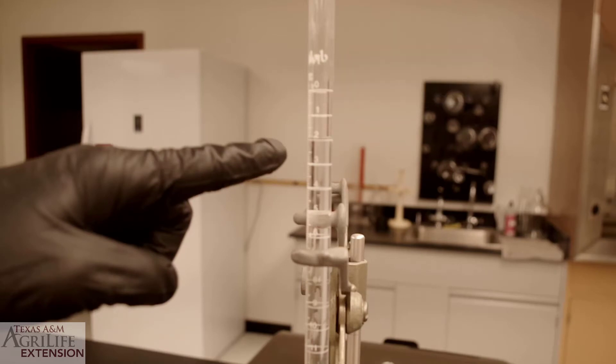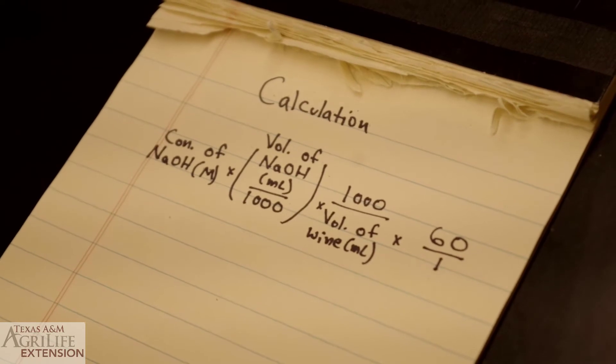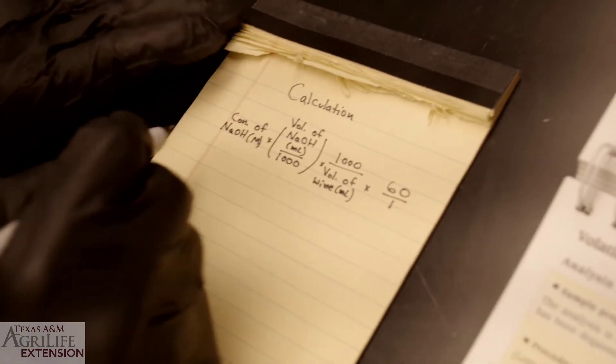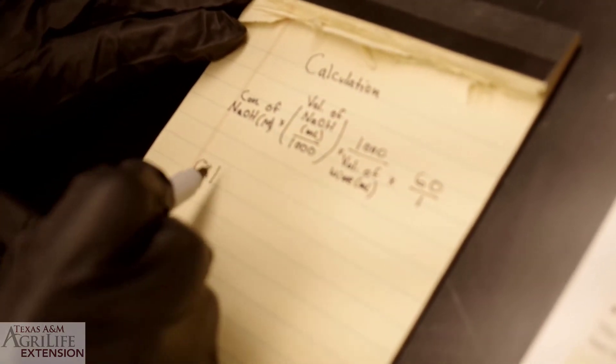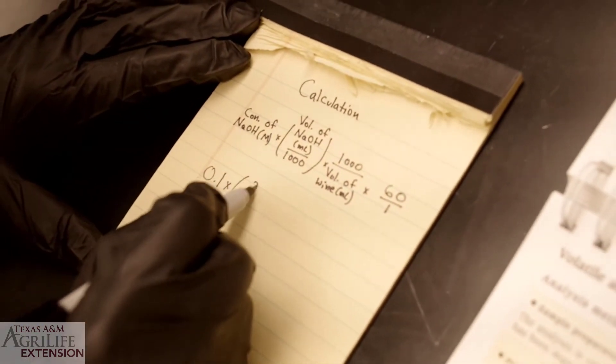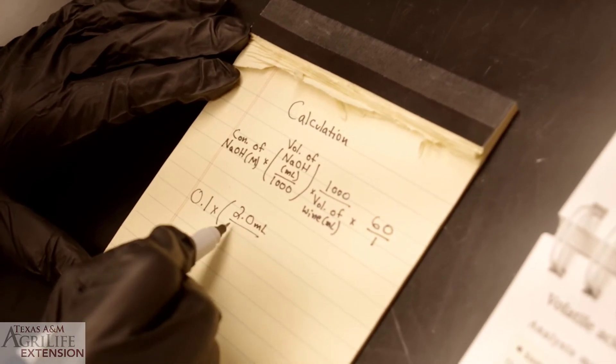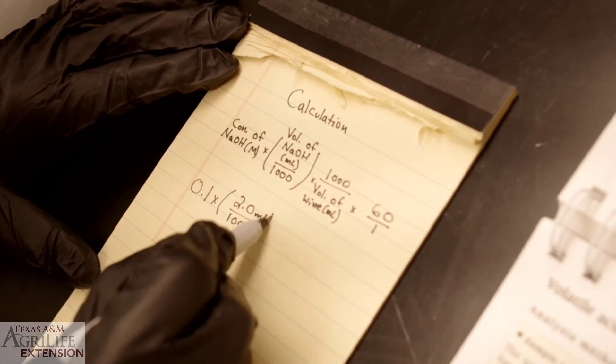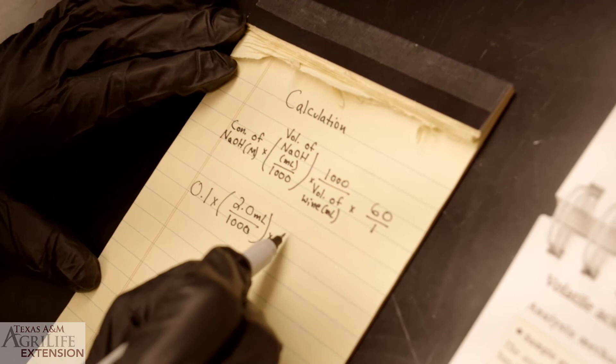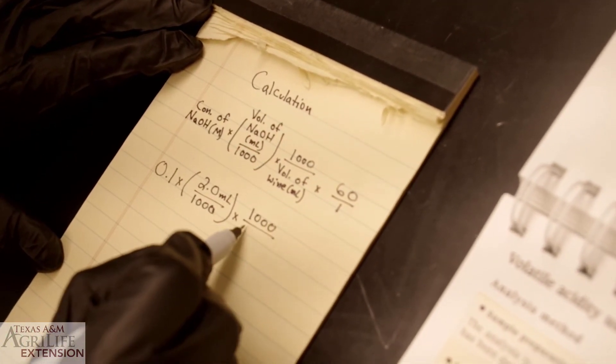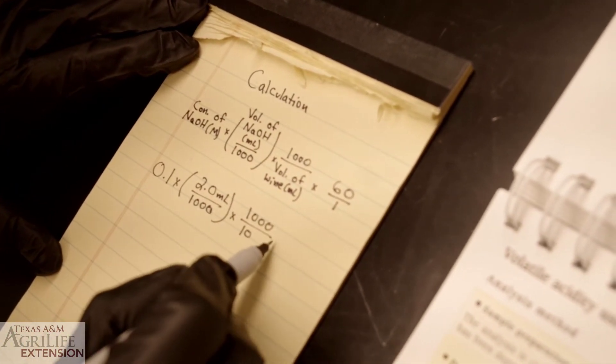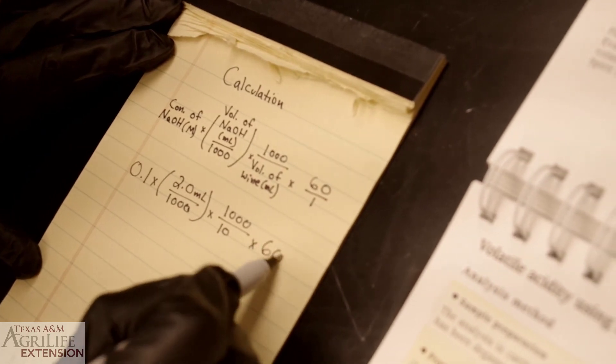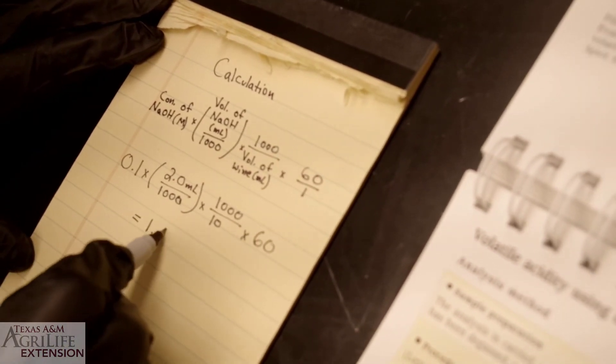It is now time for the calculation. This is the formula we are going to use. You will need to know the concentration of the sodium hydroxide solution used, in this case 0.1 normal. The volume of sodium hydroxide that was used during the titration, we used 2 milliliters. And the volume of wine that we started with, which was 10 milliliters. Plug it all in and you will get your result. 1.2 grams per liter acetic acid in our case.